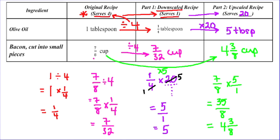And so this is the process you can use to do the downscaling and the upscaling of your recipes for the pasta perfection assignment.